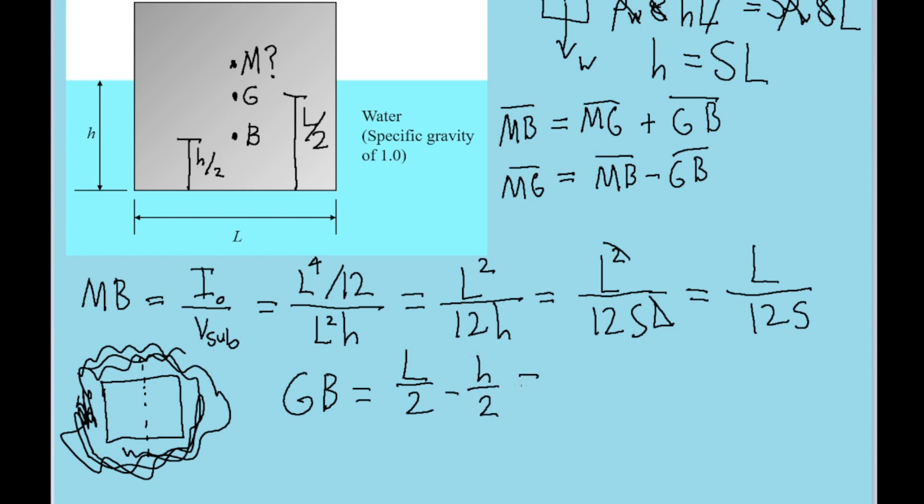I'm going to replace H with SL, so that's L minus SL, and I'm going to put them with the same denominator. Then I'm just going to factor out the L and the 2, so L over 2 times 1 minus s. So now that we've got nicer looking formulas for MB and GB, let's rewrite our formula for MG. Keeping in mind that for the block to be stable, this has to be positive. So MG is equal to L over 12s minus L over 2 times 1 minus s.